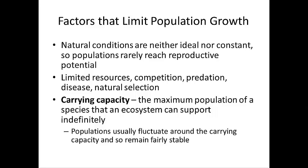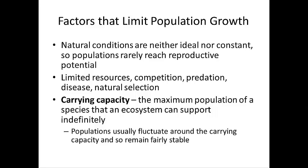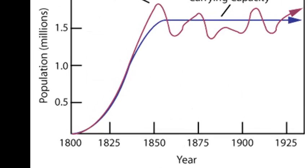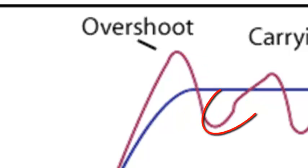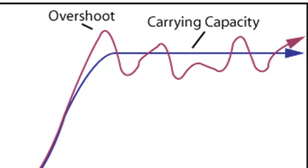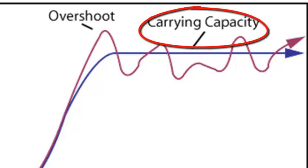Eventually, a population will reach what's called a carrying capacity — the maximum population of a species that an ecosystem can support indefinitely. The population will fluctuate around that carrying capacity, going up a little and down a little but remaining fairly stable. First the population increases exponentially, then goes above the carrying capacity, but because of insufficient resources or space, it starts to die off. Then with more space, mates, and food available, it increases again — this up-down pattern continuing around the carrying capacity.